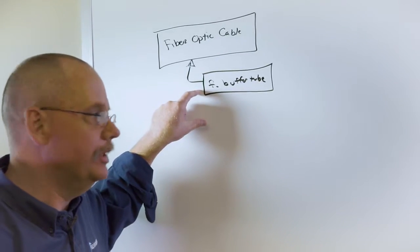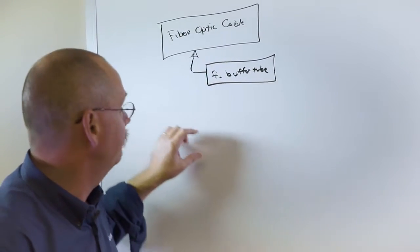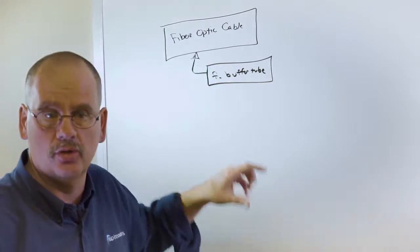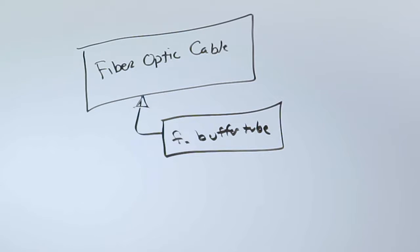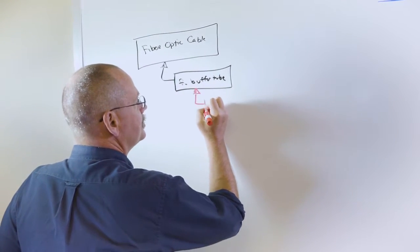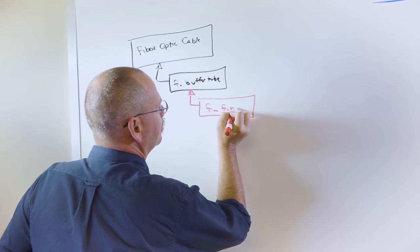Once upon a time all the related objects within the fiber manager model were prefaced with the F underscore. That way all those tables are grouped together and can be organized, migrated. Very, very handy. Then a child of a buffer tube is the fiber strand or F underscore fiber.